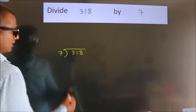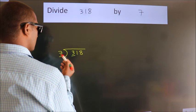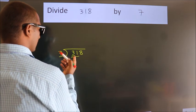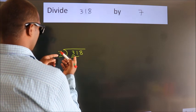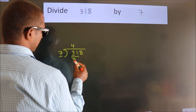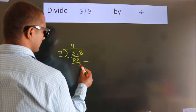Next. Here we have 3, here 7. 3 is smaller than 7, so we should take 2 numbers, 31. A number close to 31 in the 7 table is 7 times 4, 28. Now we should subtract. We get 3.